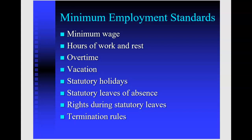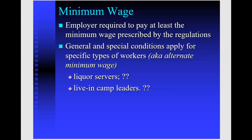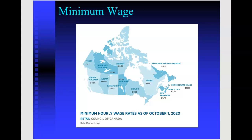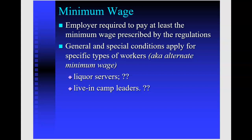Now let's look at the minimum standards in more detail: minimum wage, hours of work, overtime, vacation, holidays, leaves, and termination rules. First, minimum wage — employers are required to pay at least the minimum wage. Here in BC the minimum wage is $14.60 since June 2020, and it will increase to $15.20 on June 1st, 2021.